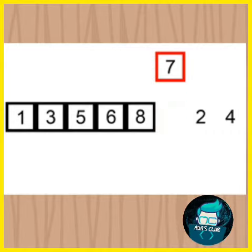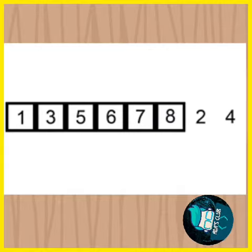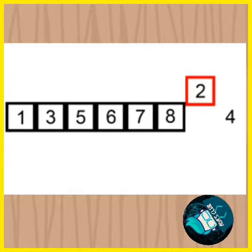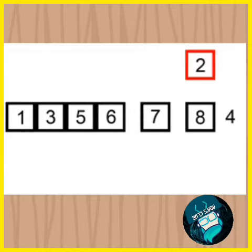Then 8 is placed in its appropriate position in sorted list. Similarly, 7 is placed in its position. Now 1, 3, 5, 6, 7, 8 becomes sorted list.